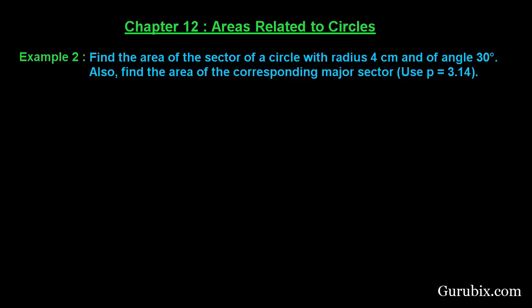Welcome friends, let us solve example number 2 of chapter 12. The example says find the area of the sector of a circle with radius 4 centimeters and angle 30 degrees. Also find the area of the corresponding major sector. Use pi equals to 3.14. This is a very easy question, let's solve it.